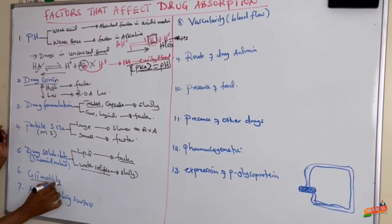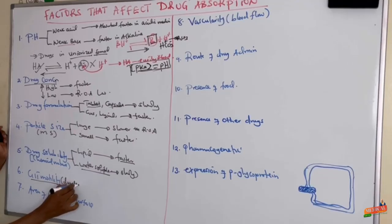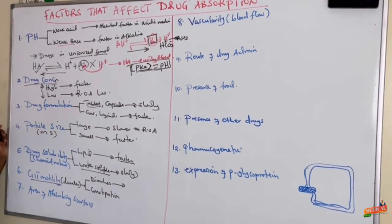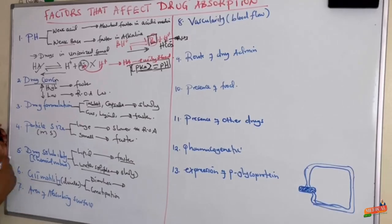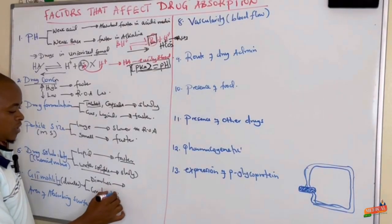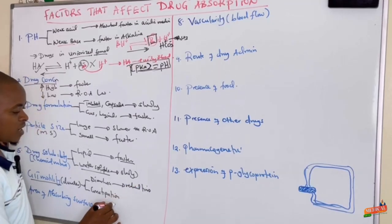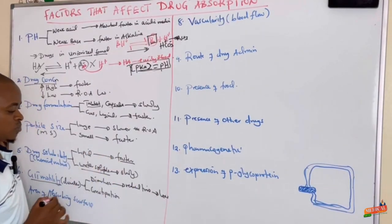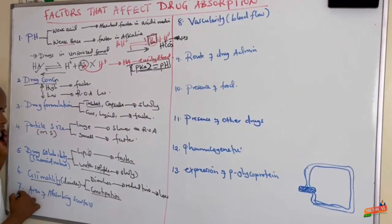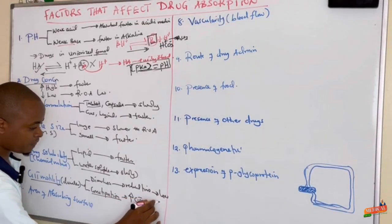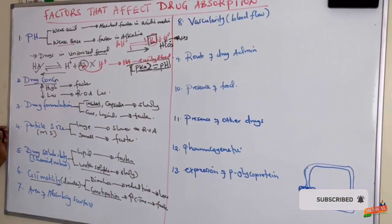The next factor is GIT motility. When someone has high GIT motility, like diarrhea and vomiting, the contact time is reduced and less drug is absorbed. When someone has constipation — low GIT motility — there is high contact time and more drug will be absorbed, because GIT motility is slower.